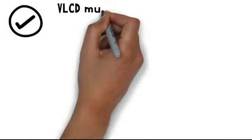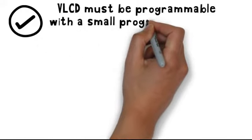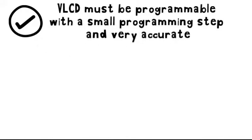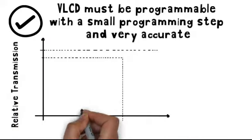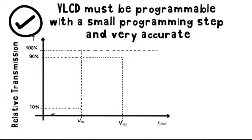VLCD must be programmable with a small programming step and very accurate to guarantee that the programmed LCD voltage value is as close as possible to the optimum value across process variations.